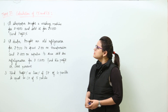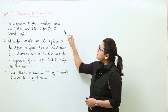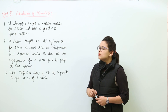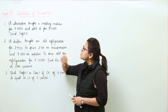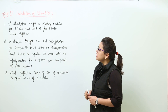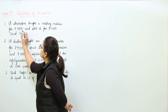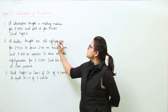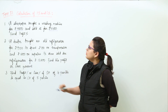Let us learn how to calculate profit percent and loss percent. The first question: a shopkeeper bought a washing machine for rupees 4800 and sold it for rupees 6480. We have to find out the profit percent.